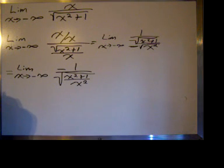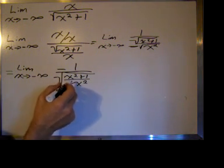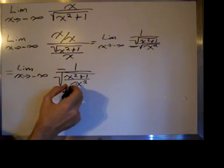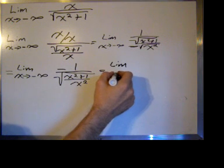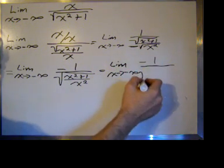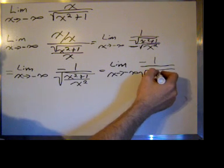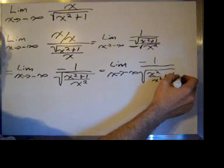Now we're going to split up this fraction, x squared plus one over x squared can be written as x squared over x squared plus one over x squared.